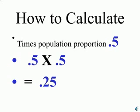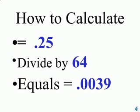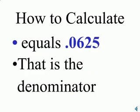We then take that product of 0.25 and we divide by our sample size of 64. This gives us 0.0039. We then square root that and we get 0.0625. That is the denominator.